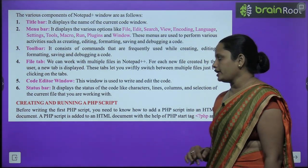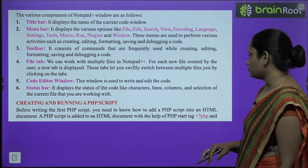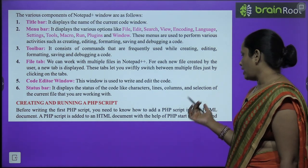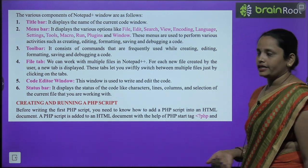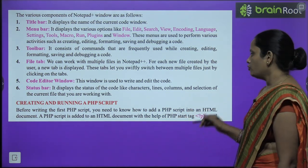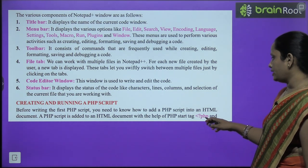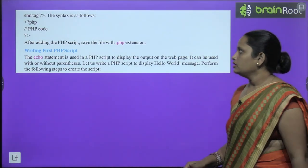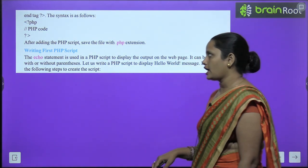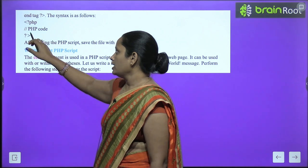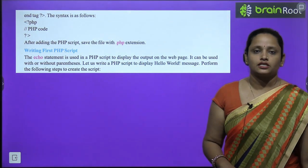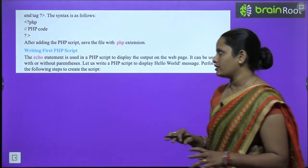Before writing the first PHP script, you need to know how to add a PHP script into the HTML document. PHP script is added to the HTML document with the help of a PHP start tag and an end tag. The syntax uses an opening tag for PHP, then the code, and then the closing tag. After adding the PHP script, you have to save the file with a .php extension.